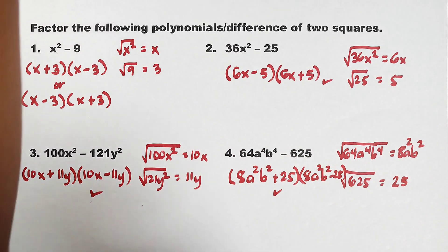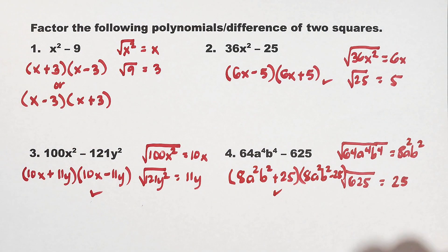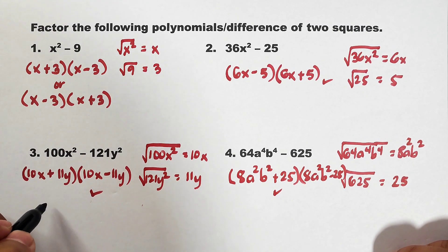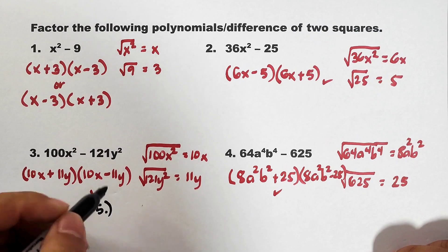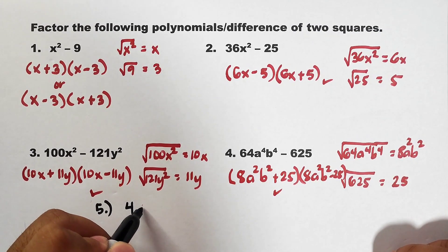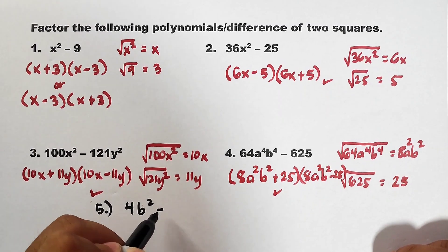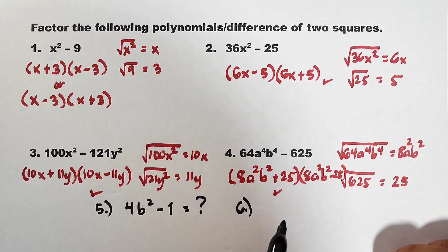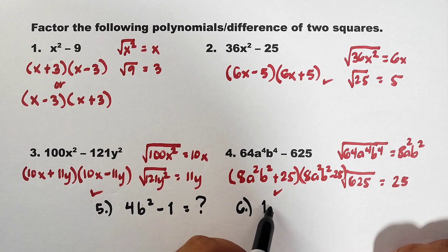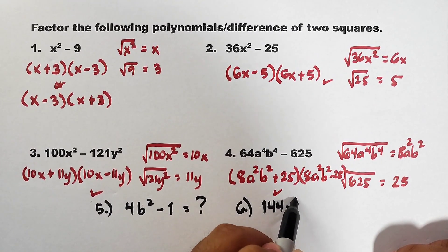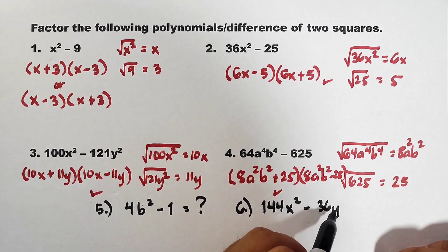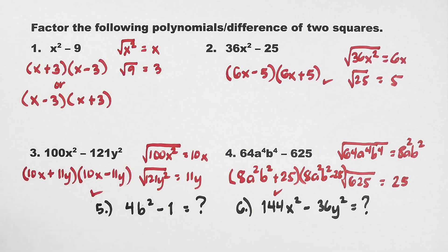Now as part of our routine, I will give you an assignment to solve. For number five, I will give you 4b squared minus 1. For number six, I will give you 144x squared minus 36y squared. So that's it guys, I hope that you learned something from this video on how to factor polynomials using the difference of two squares.